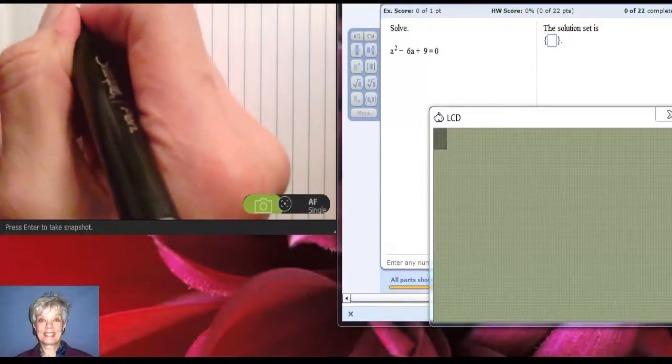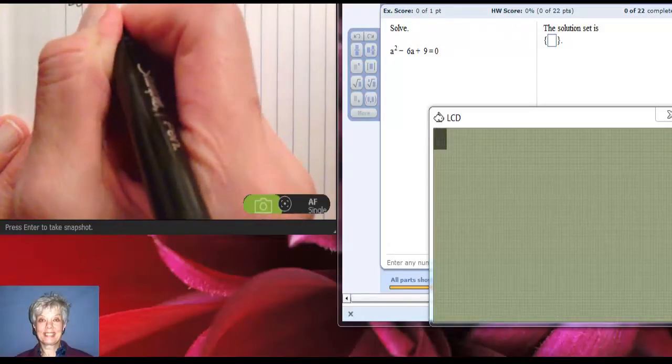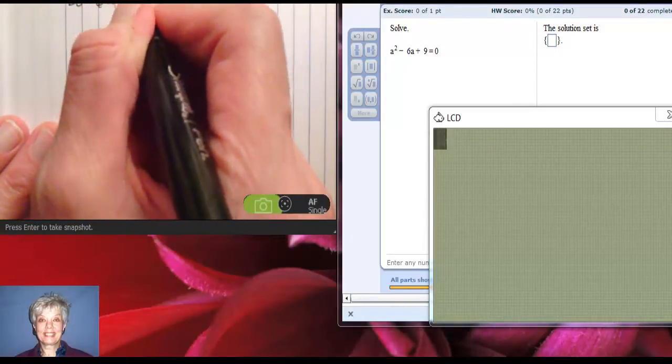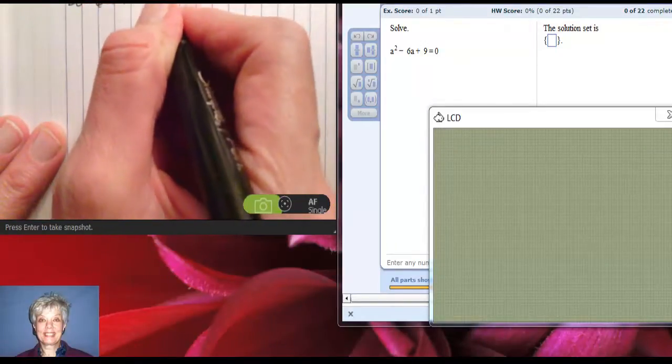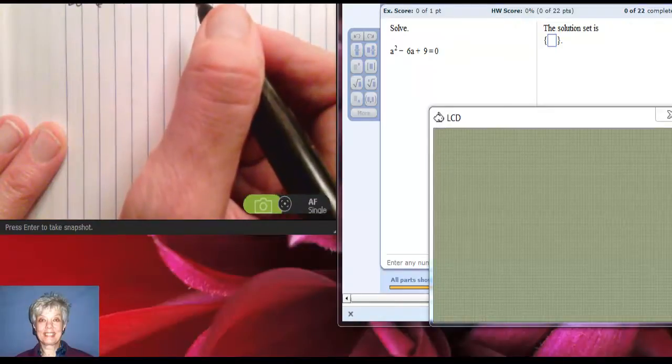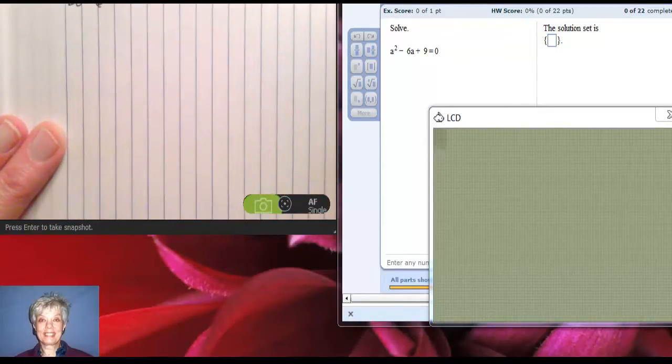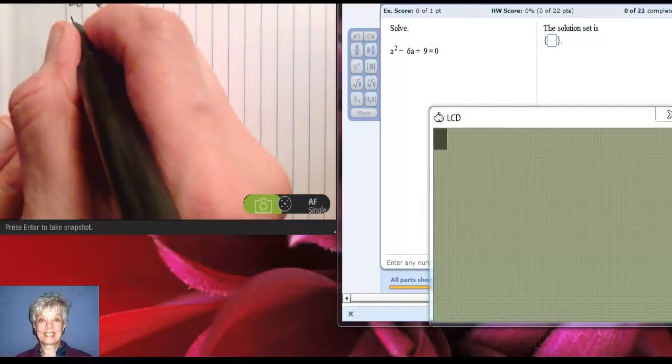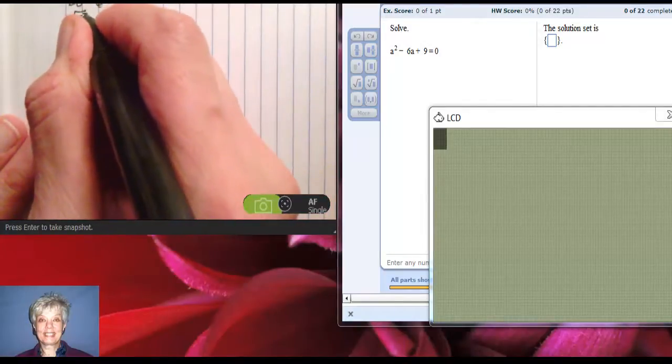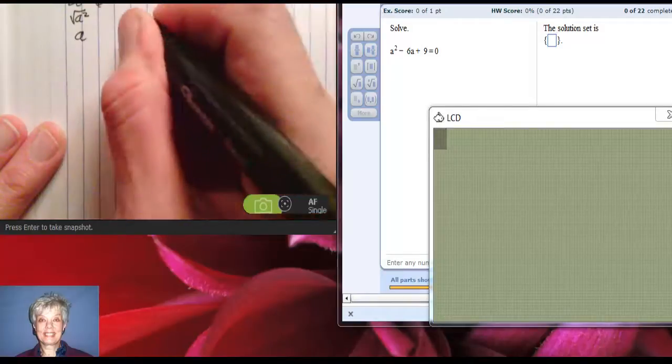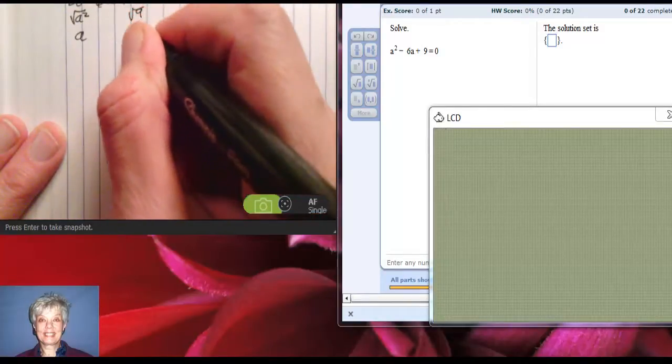I want to solve a² - 6a + 9 = 0. Okay, well this is a perfect square trinomial. The square root of a² is a, and the square root of 9 is 3.